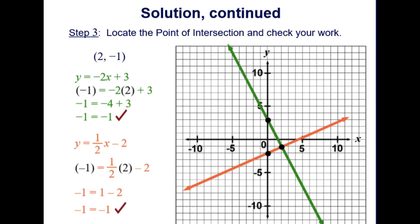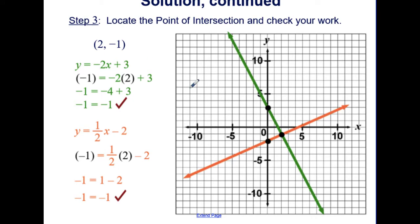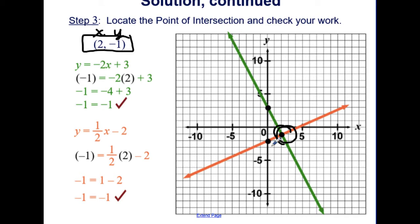Now that we have the two lines, we can see that the point of intersection is (2, negative 1). To check our work, with x equals 2 and y equals negative 1, substituting confirms it makes the green equation true and the orange equation true. Therefore, that is the solution to the system.